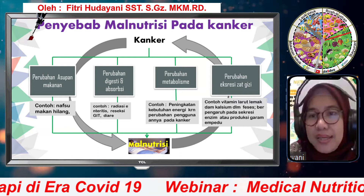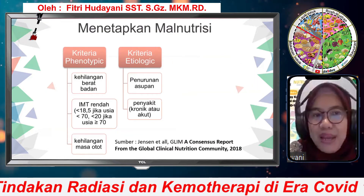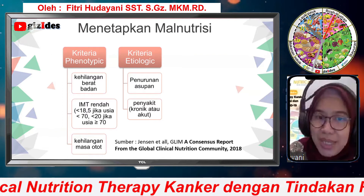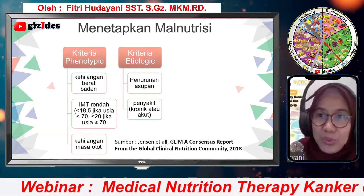Kalau kita ketemu pasien-pasien kanker, apabila ada kriteria fenotipe atau kriteria etiologik berikut ini, maka kita harus langsung aware terhadap tata laksana malnutrisinya. Ada kehilangan berat badan, IMT-nya rendah, kehilangan massa otot, atau ada kriteria penyebabnya seperti asupan berkurang, atau ada penyakit kronik atau akut, dalam hal ini penyakit kanker. Kalau sudah ada kriteria etiologik, kita cari lagi: ada tidak penurunan asupan makan, ada tidak penurunan berat badan. Kalau ada, tingkat awareness kita harus jauh lebih tinggi.